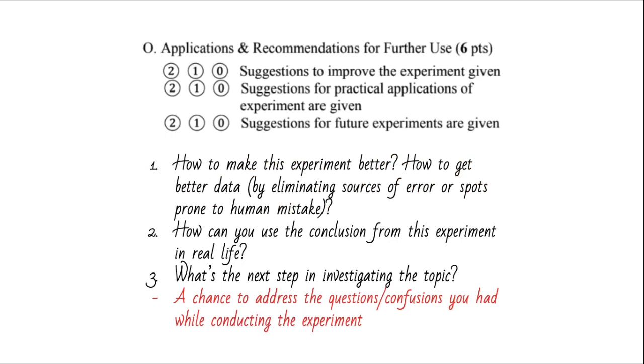The last part, applications and recommendations for further use. It's basically three main chunks. First of all, are there anything from this experiment that you wish would be better? Maybe you only had a meter stick, but you wish to have some really fine, precise measurement devices. That's a suggestion to improve the experiment. It helps eliminate the sources of error. You can get better data points out of those, or maybe there was a very hazardous move that you had to do. You don't have to do, maybe, by doing so and so.